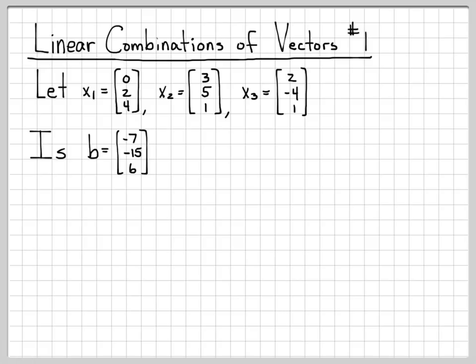What we're going to ask ourselves is: is the vector b, which is negative 7, negative 15, and 6, a linear combination of x1, x2, and x3?